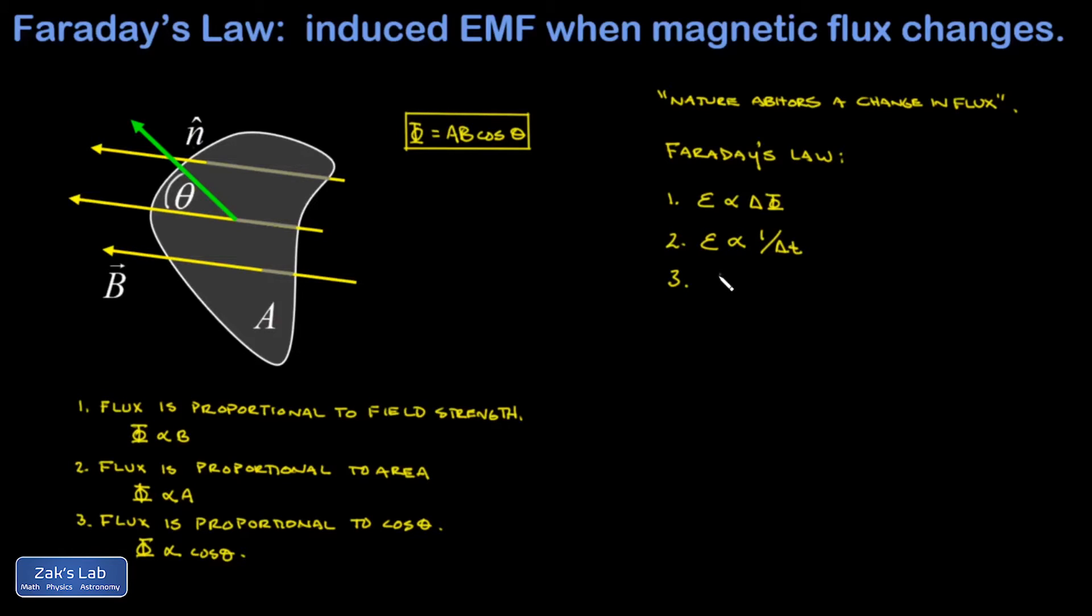And third, the induced EMF is going to be proportional to how many turns there are in the loop. So now we're generalizing to the possibility that our loop has many, many turns in it and not just one single coil of wire. So if I double the number of turns in a coil, that doubles the flux just because I have twice as many loops catching field lines. And so of course, if I change the flux, I'm going to get twice the EMF induced.